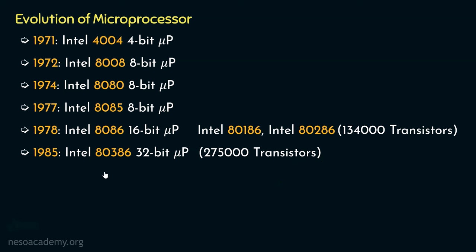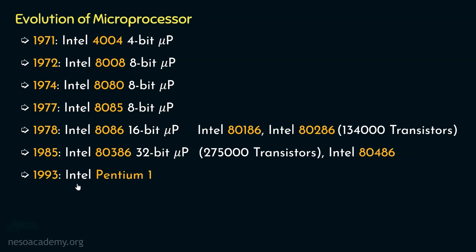The next model of the x86 family was Intel's 80486, a 32-bit microprocessor with a built-in math coprocessor. Then in 1993, Intel launched the Pentium 1, which marked the origin of Intel's Pentium series. It falls under the ULSI integration category, consisting of 3.1 million transistors on a chip. Pentium 1 allowed computers to process real-world data like speech, sound, handwriting, and photographic images.